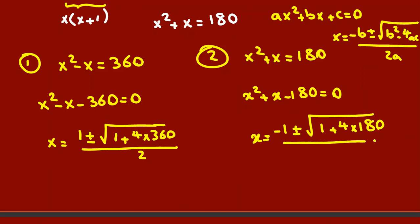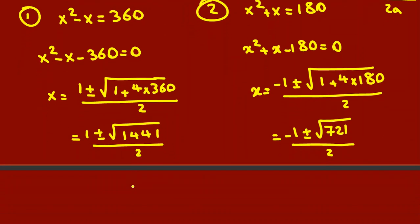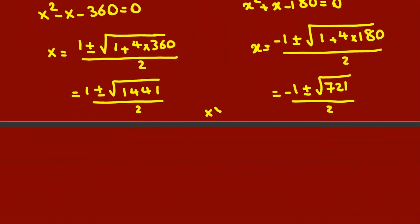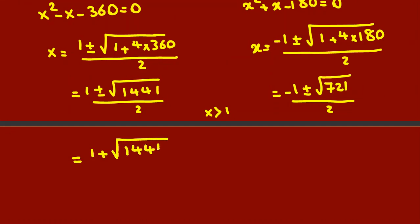This will be 1 plus or minus square root of (1 plus 4 times 360) over 2, which is 1 plus or minus square root of 1441 over 2. And this one: negative 1 plus or minus square root of (1 plus 4 times 180) over 2, which is negative 1 plus or minus square root of 721 over 2. We know x is greater than 1. Because x is greater than 1, you can't use the negative. The first one will be (1 plus 1441) over 2, and the next one will be (negative 1 plus square root of 721) over 2. Because if you take negative, it will be negative, but x is greater than 1 and positive.